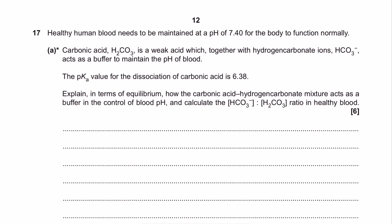The carbonic acid, H2CO3, is a weak acid which together with the hydrogen carbonate ion, HCO3 negative, acts as a buffer to maintain the pH of blood. And we've got a pKa value here as well for the dissociation of the carbonic acid at 6.38.